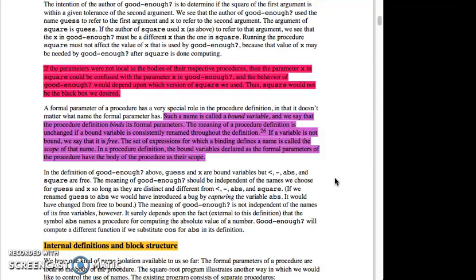A formal parameter of a procedure has a very special role in the procedure definition in that it doesn't matter what name the formal parameter has. Such a name is called a bound variable, and we say that the procedure definition binds its formal parameters. The meaning of a procedure definition is unchanged if a bound variable is consistently renamed throughout the definition. If a variable is not bound, we say that it is free. The set of expressions for which a binding defines a name is called the scope of that name. In a procedure definition, the bound variables declared as the formal parameters of the procedure have the body of the procedure as their scope.